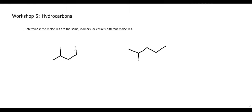For the next question, we're given two molecules — there will be three sets. For each set, we have to determine if the two molecules are the same, if they are isomers, or if they are two entirely different molecules. Recall that isomers are molecules with the same molecular formula but different structure and different connectivity. If they're entirely different molecules, they will have different molecular formulas. If they're the same molecule, they have the same formula and the same connectivity — just drawn differently.